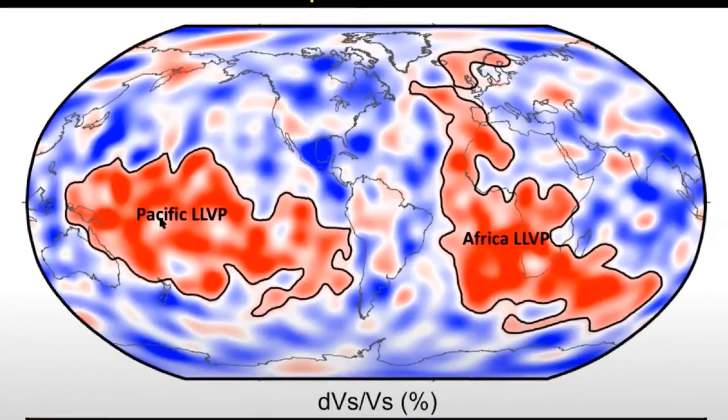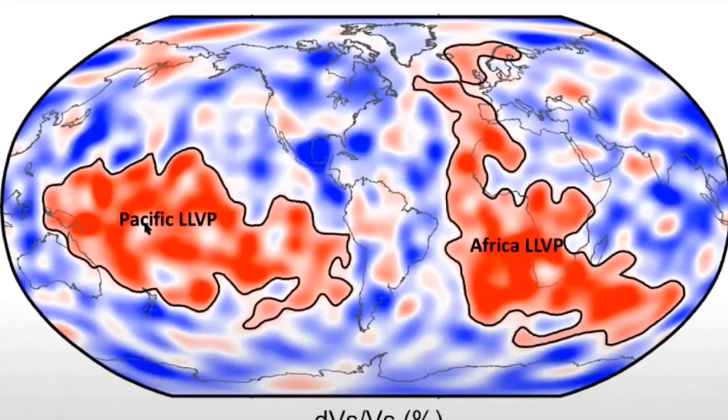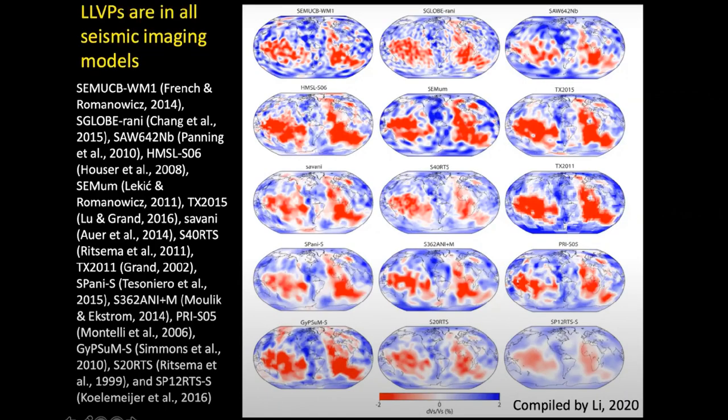indicating that the two may have different compositions and evolution. The calculations found that the initial volume of the blobs does not affect their height. The height of the blobs is mainly controlled by how dense they are and the viscosity of the surrounding mantle.